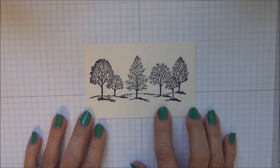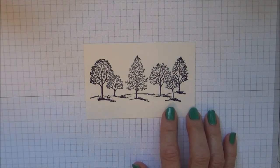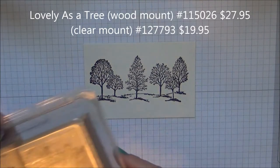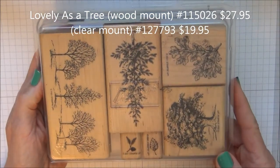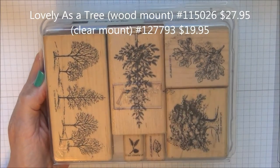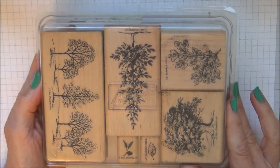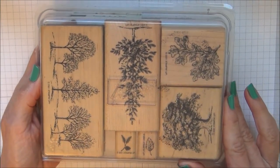I've stamped an image from a set called Lovely as a Tree. This is an older stamp set from Stampin' Up. It's still available. You can see the copyright information was 2001 and it's still available on the new catalog that's coming out.